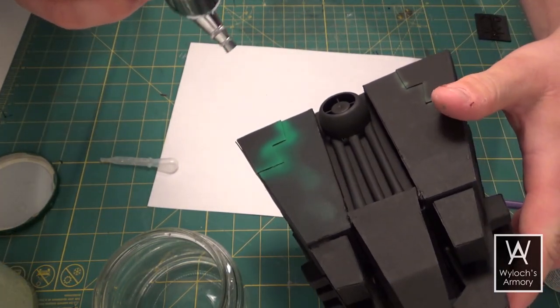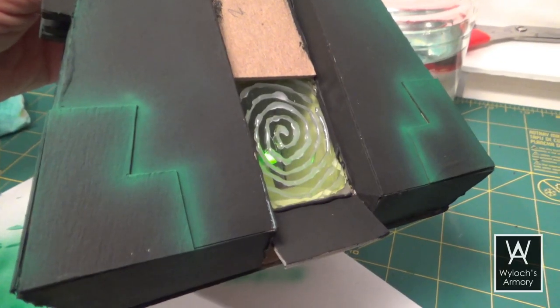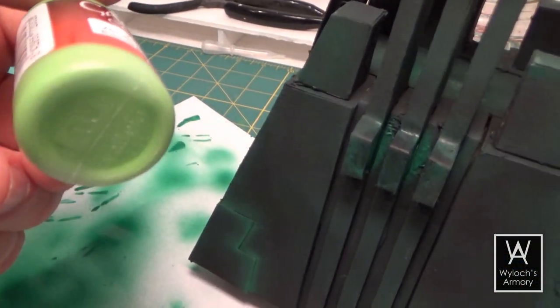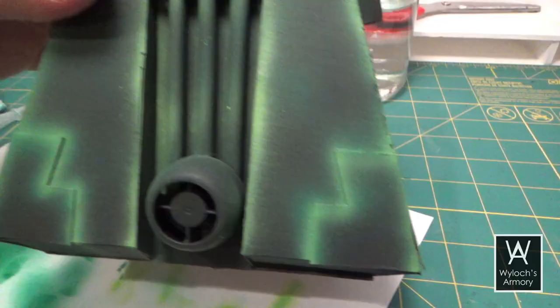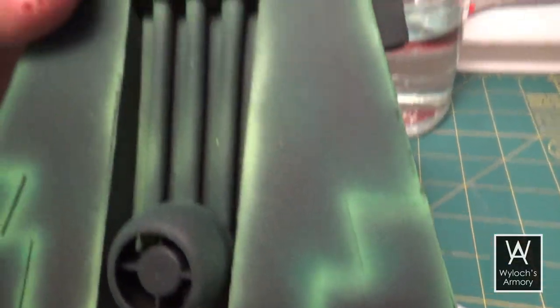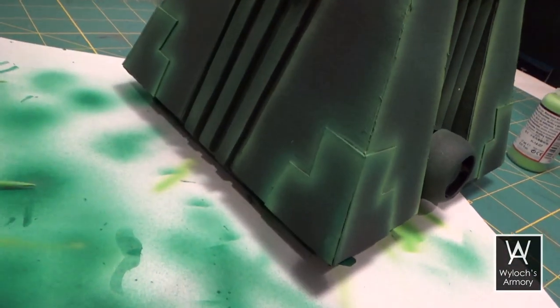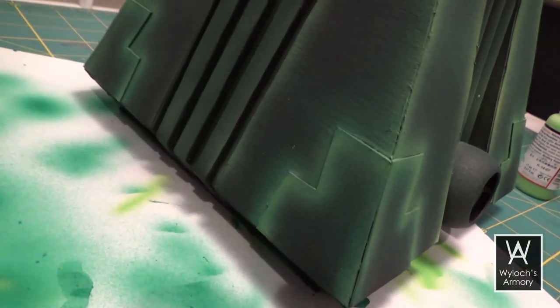Next up is a lime green color, which I only applied to the corners and edges, a little closer in so that the width of the beam is slightly smaller than the original base green. Again, we're working up towards a glow effect.